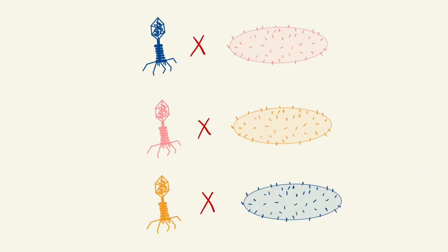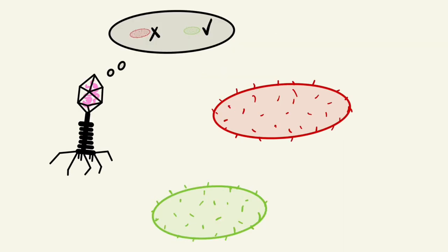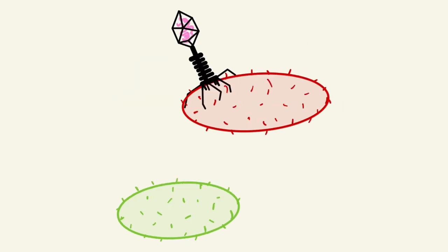Bacteriophage are extremely specific, meaning they only kill intended bacteria. Due to this specificity, the bacteriophage will not kill any of the good bacteria that we need as humans.